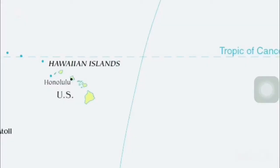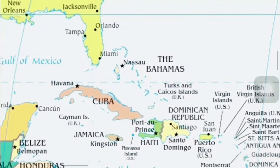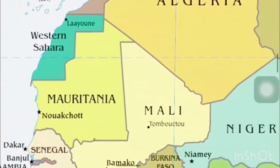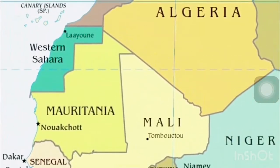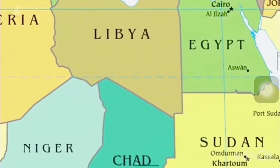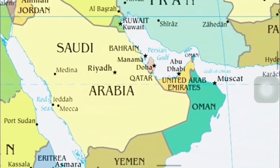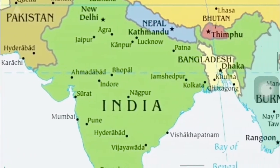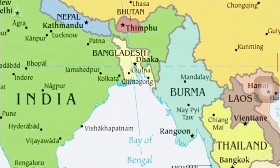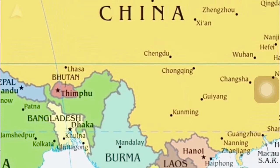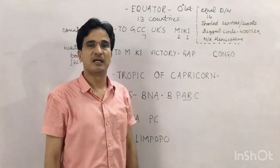For better understanding, let's look at the map, starting from the western side in North America. The trick 'Hai Mai Bahena' covers Hawaiian Islands, Mexico, and Bahamas. For African countries, the trick 'WCO M Mali' gives us Western Sahara, Mauritania, Mali, Algeria, Niger, Libya, and Egypt. For Asian countries, 'S U OM at IBM CHET' gives Saudi Arabia, UAE, Oman, India, Bangladesh, Myanmar (Burma is the old name), China, and Taiwan — the last country.